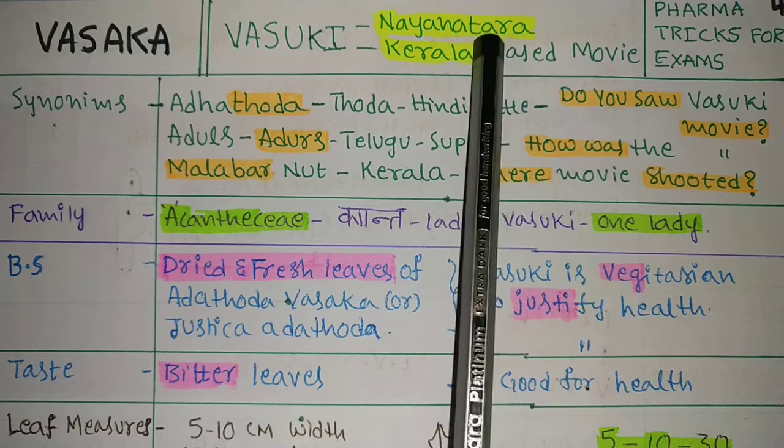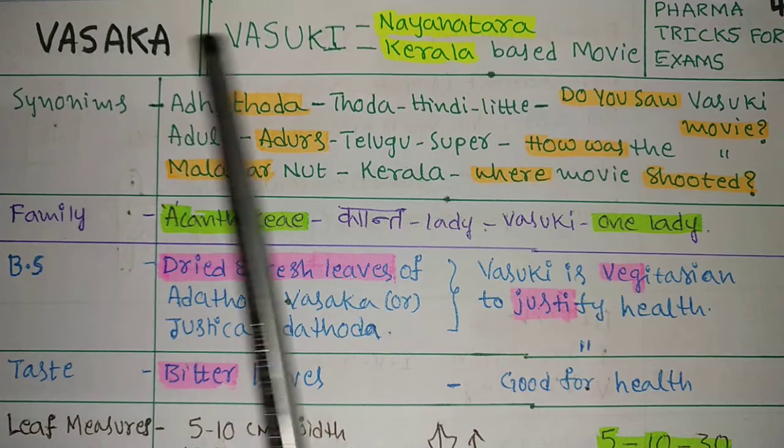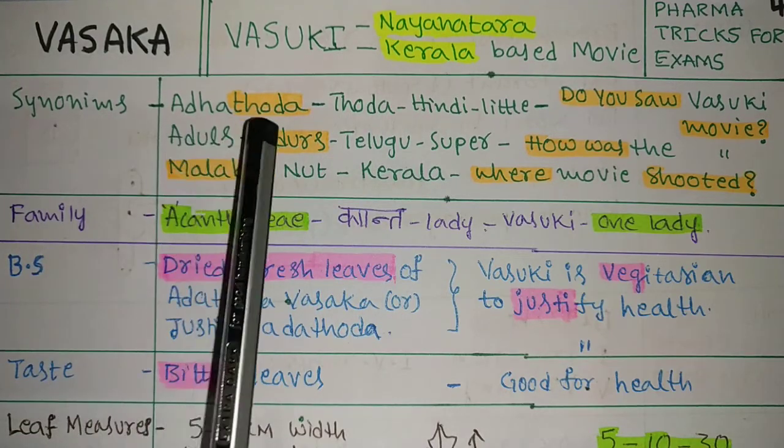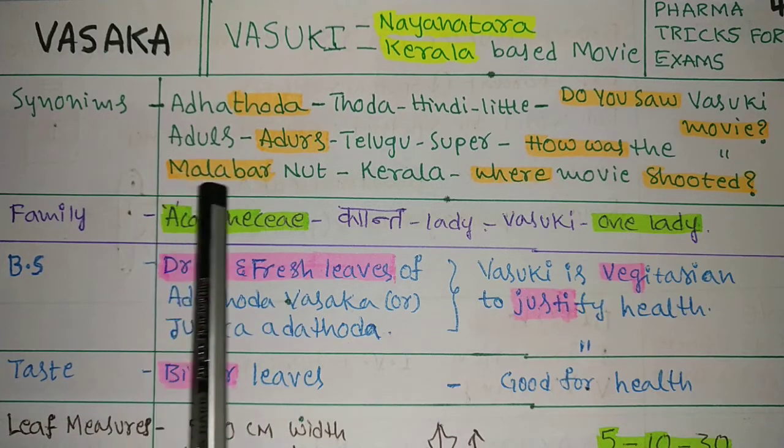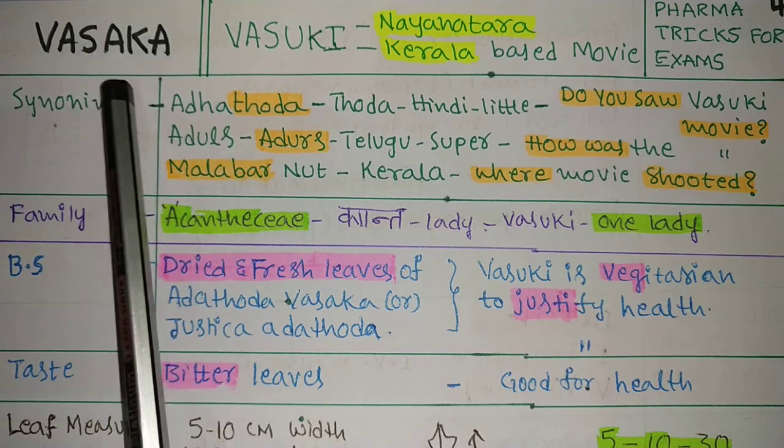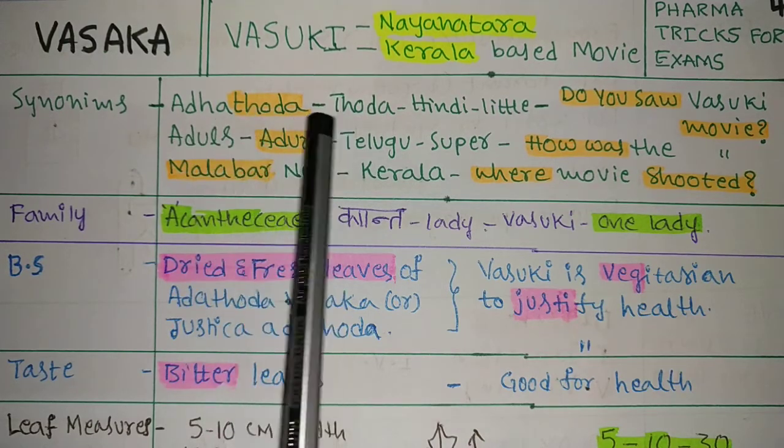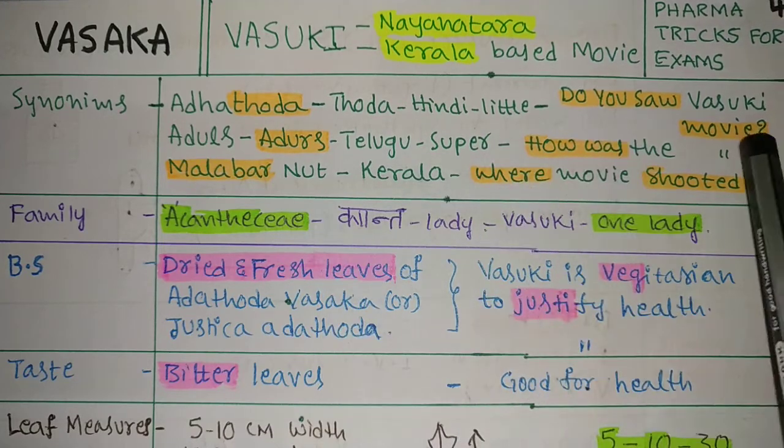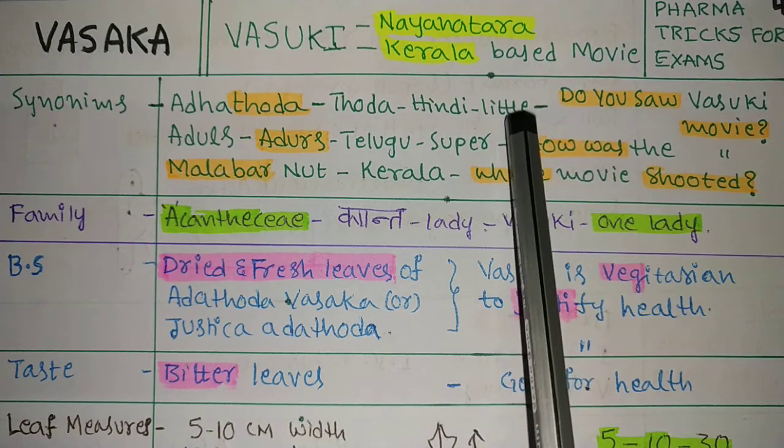Next, the synonyms. There are three synonyms: Adhatoda, Aduls, and Malabarnut. How to remember this? Adhatoda - 'thoda' means 'a little' in Hindi. Do you saw the Vasuki movie? No, I saw only a little bit of the movie, only thoda, Adhatoda.